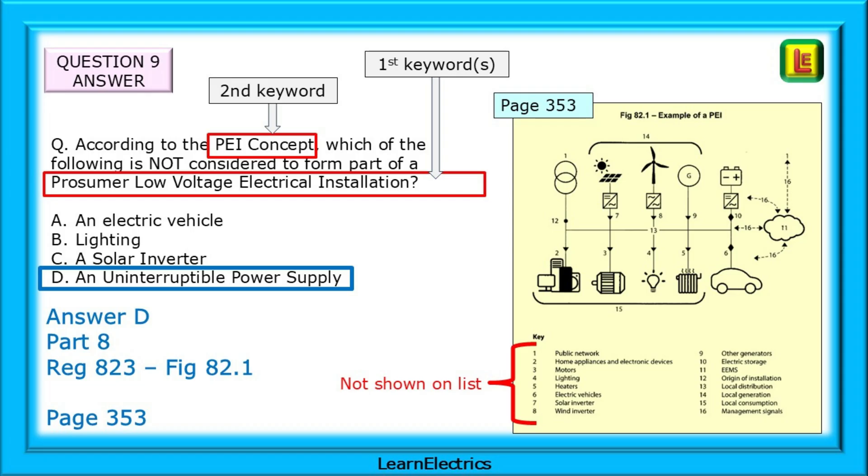Our answer choice is choice D. The first key word to use is prosumer low-voltage electrical installation, and this appears on page 3, the contents page. This will direct us to part 8 of the book. The second key word is PEI concept, and we find this in Regulation 823 on page 353. Look at figure 82.1, and the words uninterruptible power supply are not there. This then is the answer.